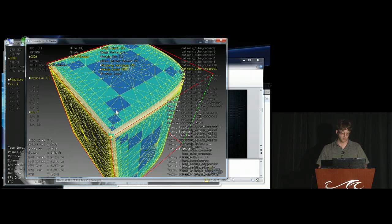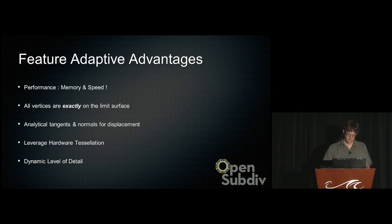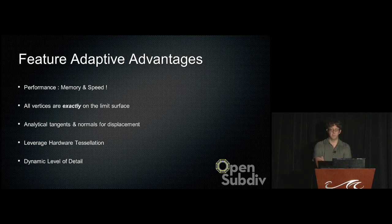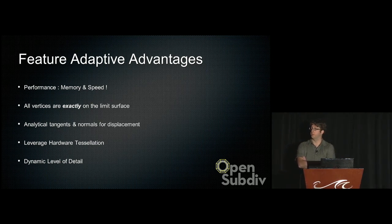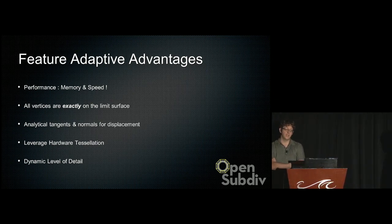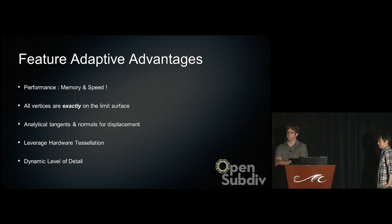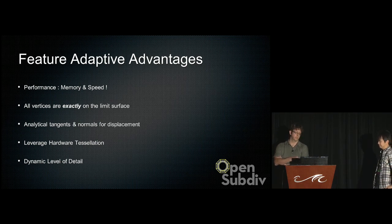Adaptive subdivision gives us a much higher-performance representation. All of the vertices are exactly on the Catmull-Clark limit surface — there's no approximation, which is important for consistency with the render. We're generating analytical tangents and normals on the GPU for displacement, giving a very well-defined surface rather than interpolating normals across a polygon mesh. We leverage hardware tessellation, and what we'll show you next is dynamic level of detail.